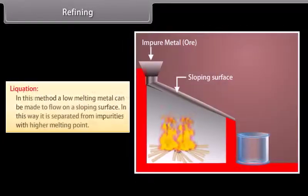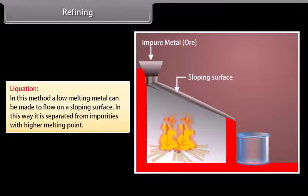Liquidation. In this method, a low melting metal can be made to flow on a sloping surface. In this way, it is separated from impurities with higher melting point. For example, tin.